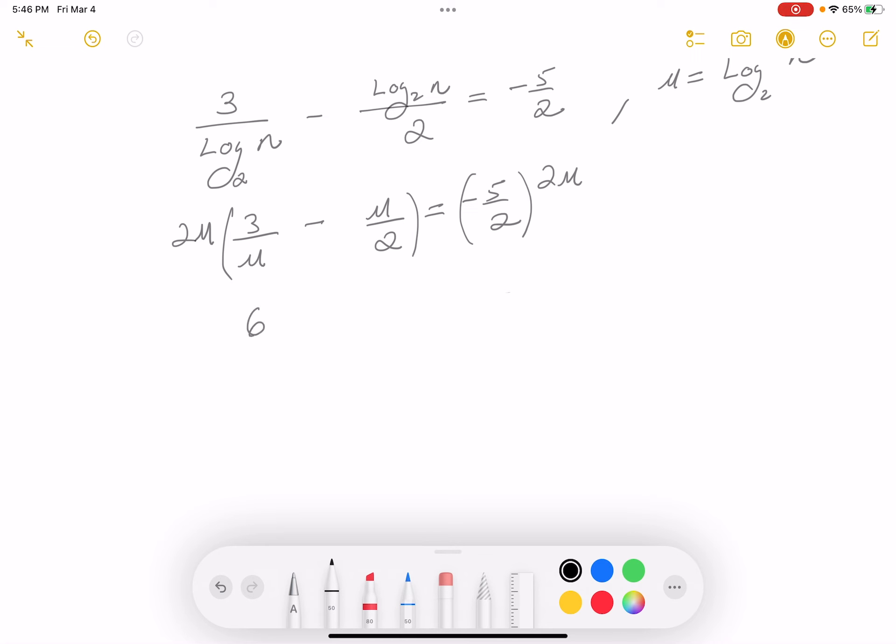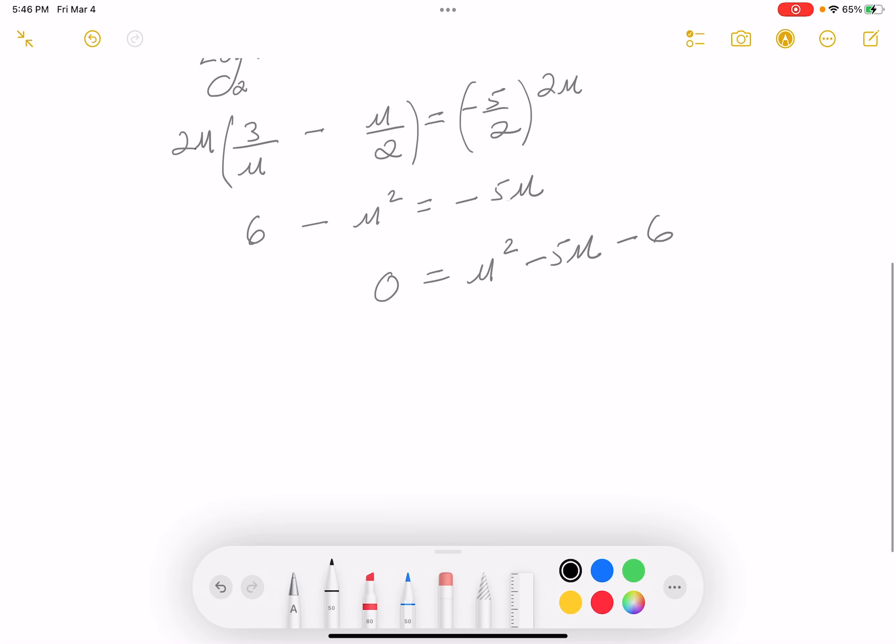What do you get? You're going to get 6 minus u squared equals minus 5u. Well, this is quadratic in form. So it's u squared minus 5u minus 6. I'm going to factor that. That's going to be u, u. It looks like 1 and 6, right? And minus 6 plus 1. So u is minus 1 or u is equal to 6.